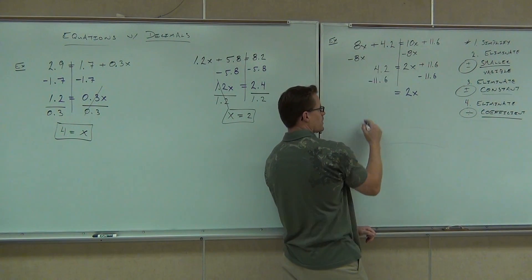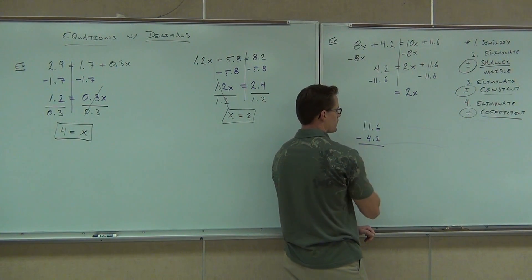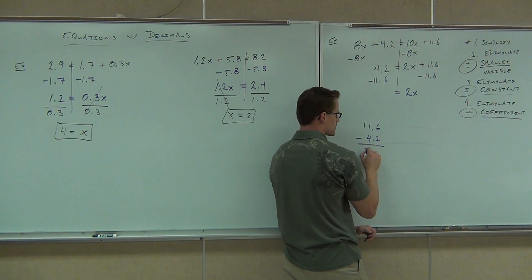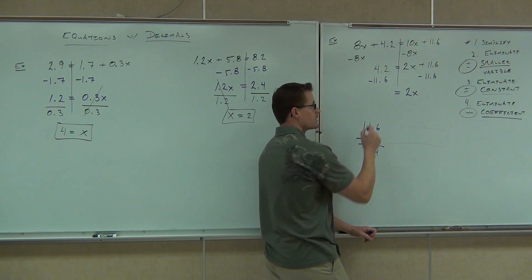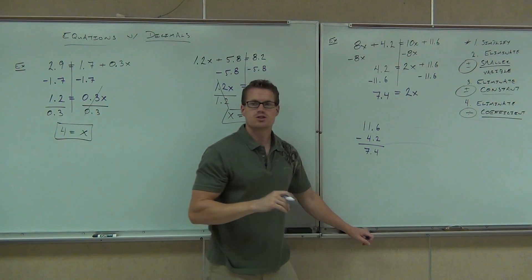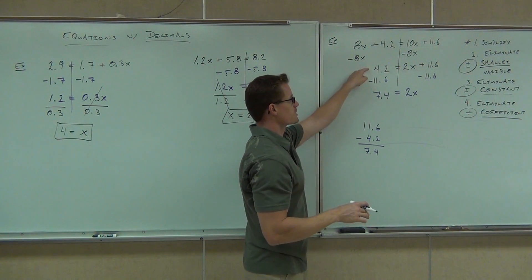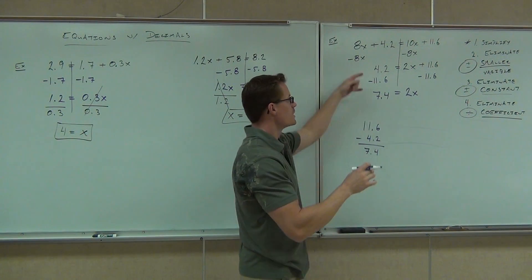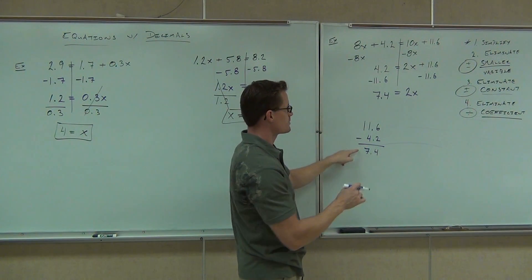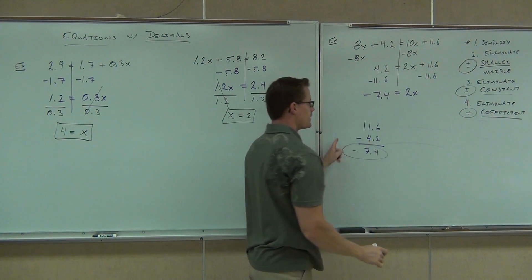So watch how I'm going to do this. Signs are different. I'm going to take 11.6 minus 4.2. I'm going to get 7.4. The question is, is it positive 7.4 or negative? So you've got to use those addition rules appropriately, even still. So we have different signs. You're adding subtracting, so you're using addition rules. Signs are different. Subtract. Keep the sign with a bigger number. That's going to be negative.